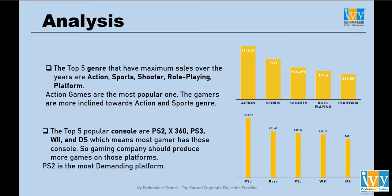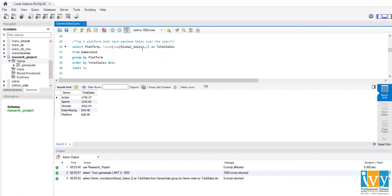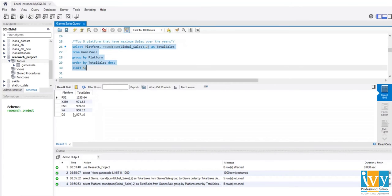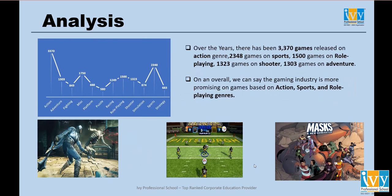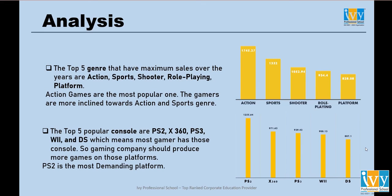Now we need to know the top five platforms that have maximum sales over the years. I have used the same approach here — I only changed the grouping part, grouping the data by platform or console. The top five popular consoles are PS2, X360, PS3, Wii, and DS, which means most gamers own those consoles. So if a gaming company wants to produce a game, it should target those platforms to get more sales. PS2 is the most demanding one.